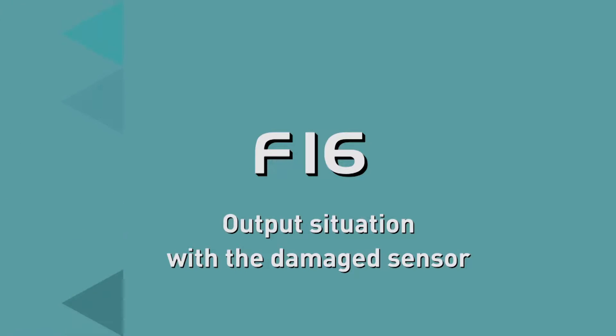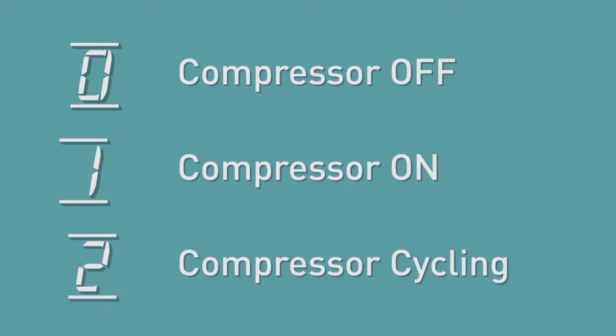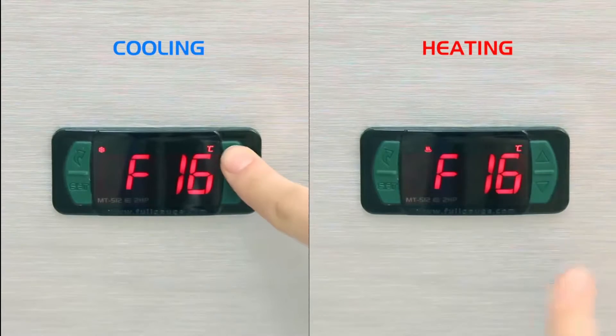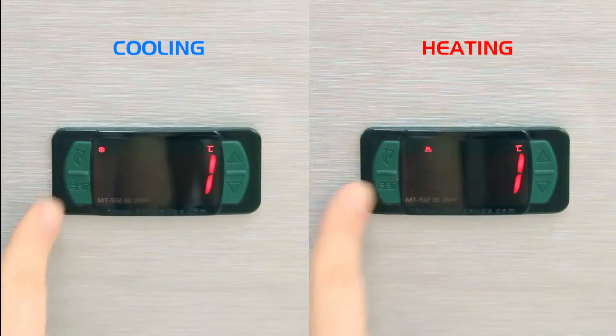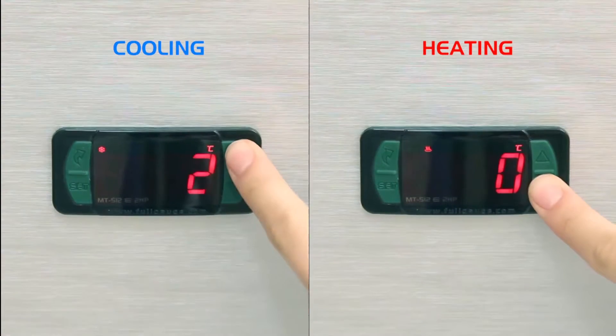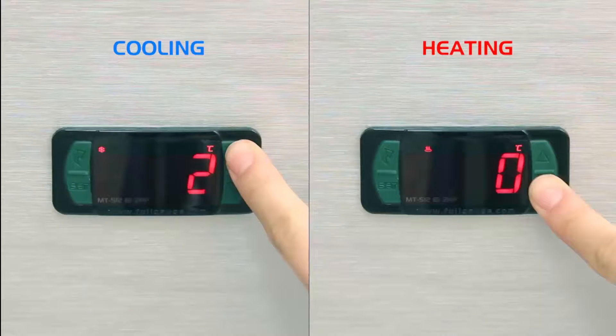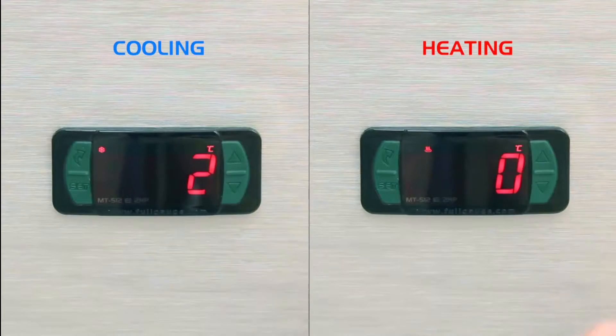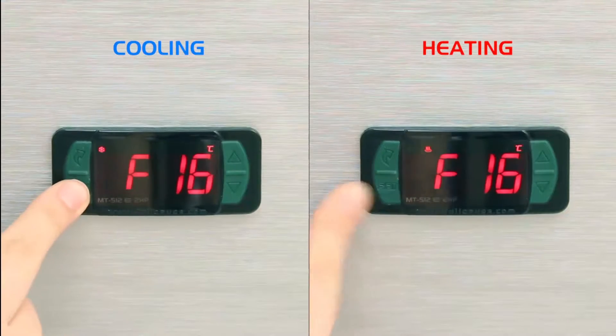F16, Output Situation with Damage Sensor. 0, to leave the compressor off. 1, to leave the compressor on. 2, to keep the compressor cycling according to time set in parameters F17 and F18. This was the option adopted in the example. If when operating and heating there is a problem with the sensor, the output is switched off.